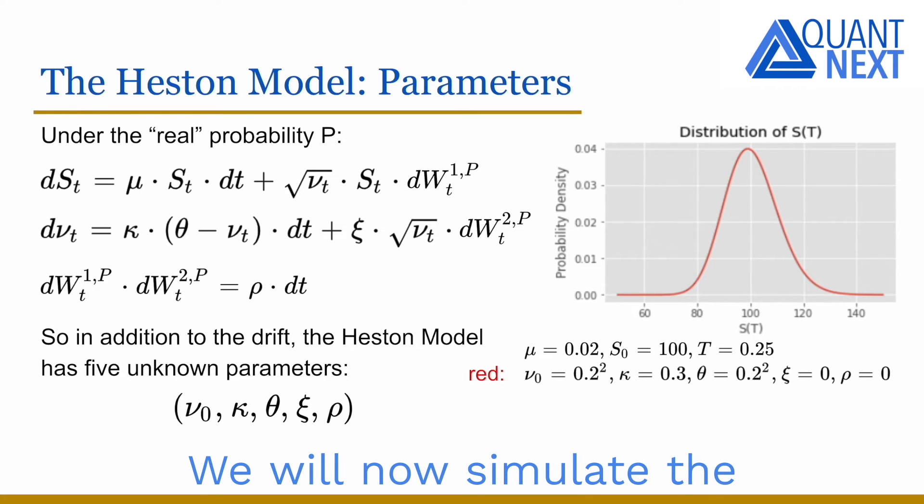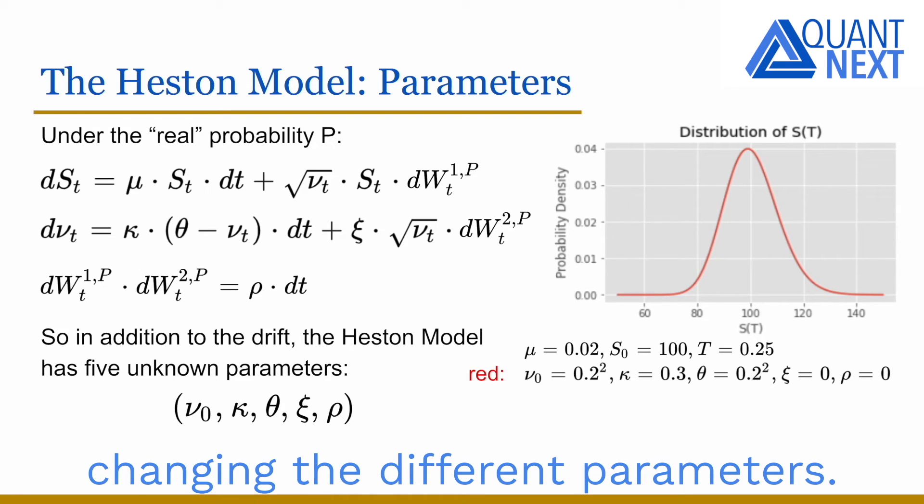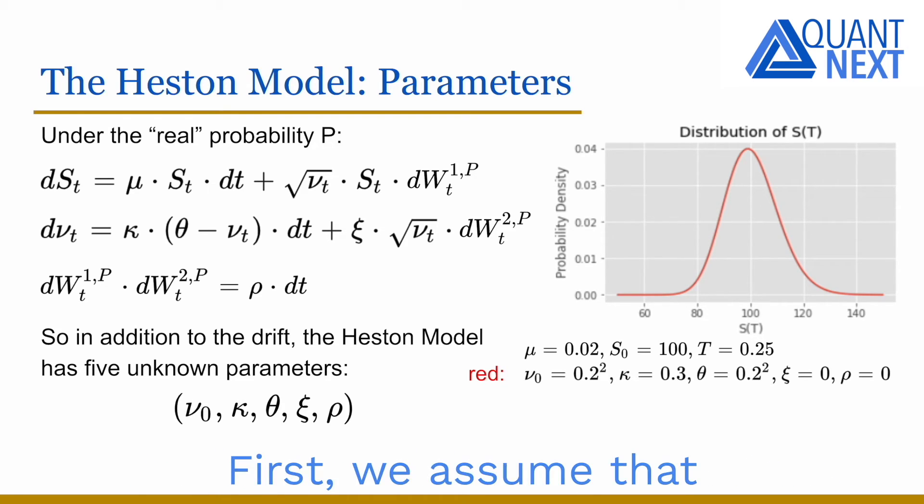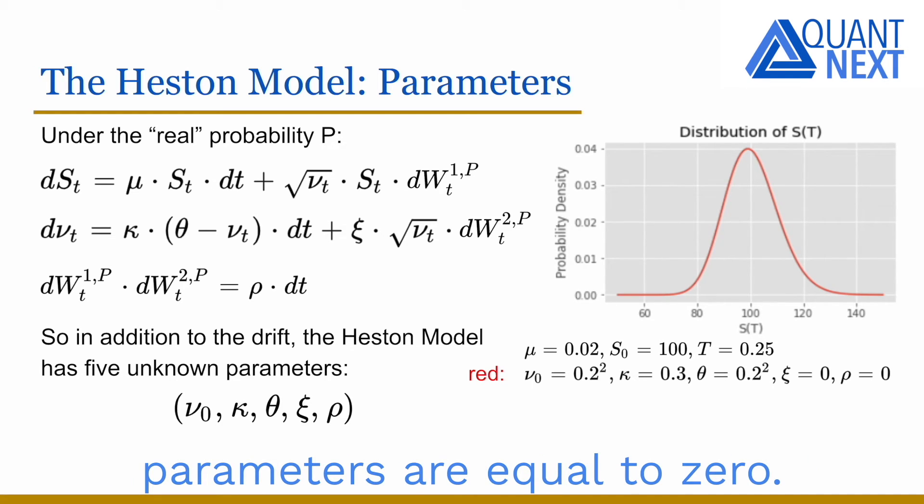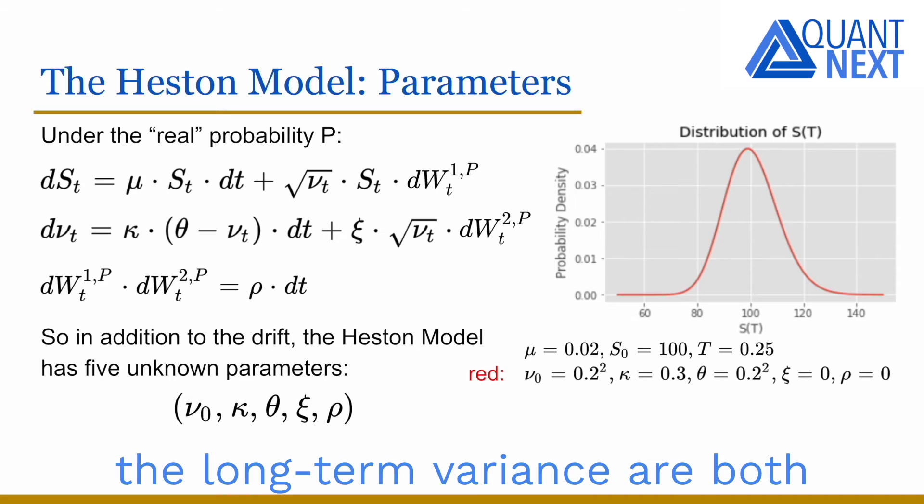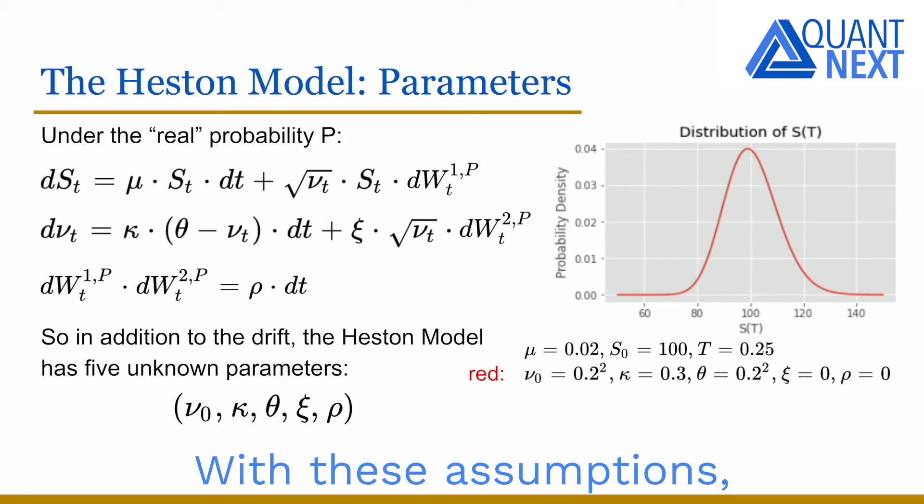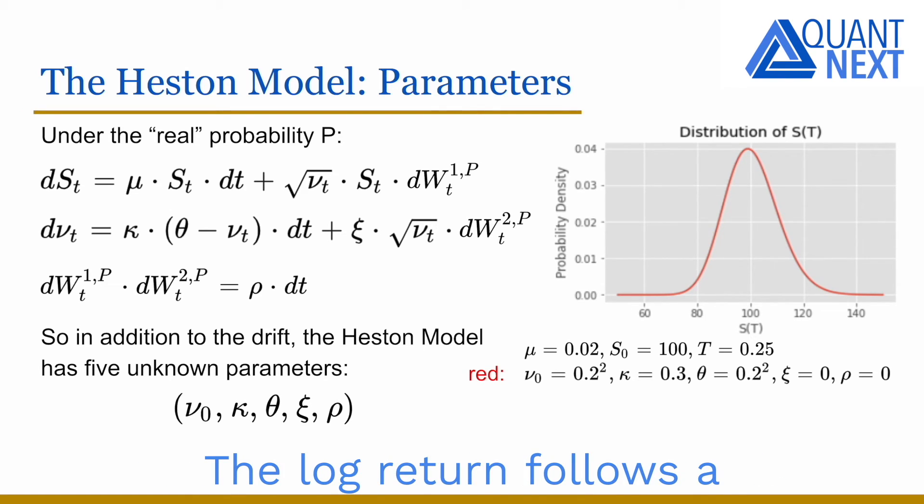We will now simulate the distribution of the asset price at a time horizon of one quarter, changing the different parameters. First, we assume that the correlation and the vol of vol parameters are equal to zero. The volatility is deterministic in this case. We also assume that it is constant, equal to 0.2 on an annualized basis. The initial variance and the long-term variance are both equal to the square of 0.2. With these assumptions, we are back to the Black-Scholes framework. The log return follows a Gaussian distribution.